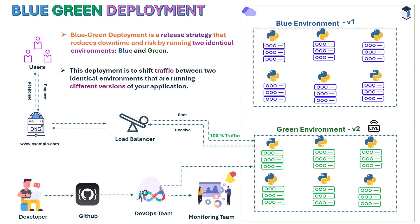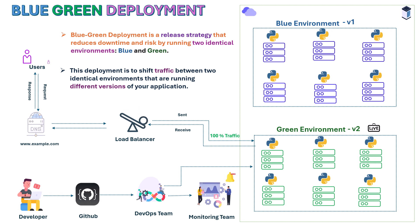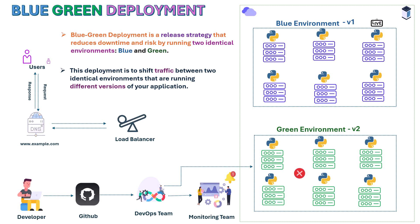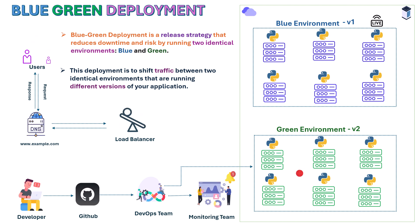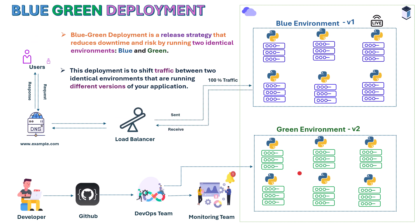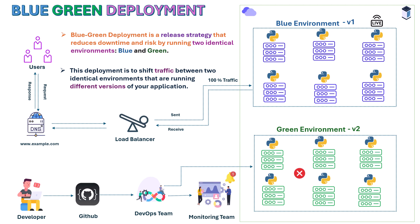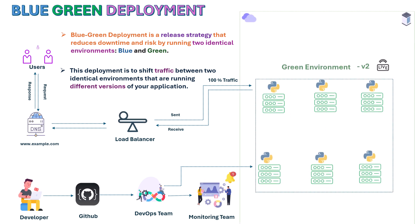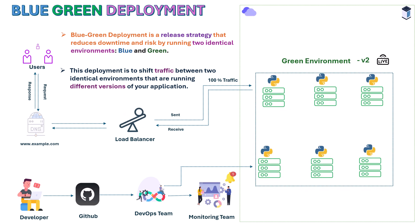The traffic shift is done using automation tools by the DevOps team. During this process, if there are any issues in the environment or if something goes wrong during monitoring, the DevOps team will immediately roll back the traffic to the blue environment.